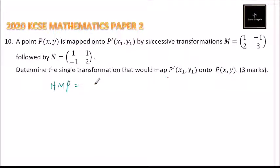So, this is what we do: we just start with N, that is (1, 1; -1, 2). Then we have M, which is (1, -1; 2, 3). Then we will have our single matrix, which is combination of those two.